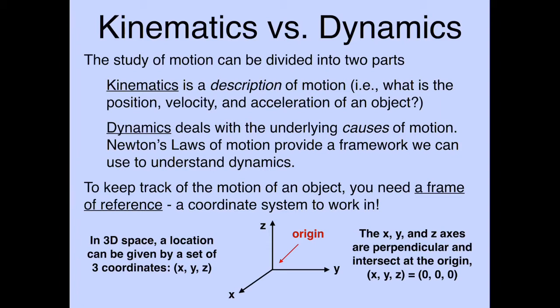To describe how something is moving, you need a frame of reference — a coordinate system. If we're dealing with three-dimensional space, we have x, y, and z axes, all perpendicular to each other. They all intersect at a point called the origin of the coordinate system, which has coordinates (0, 0, 0).